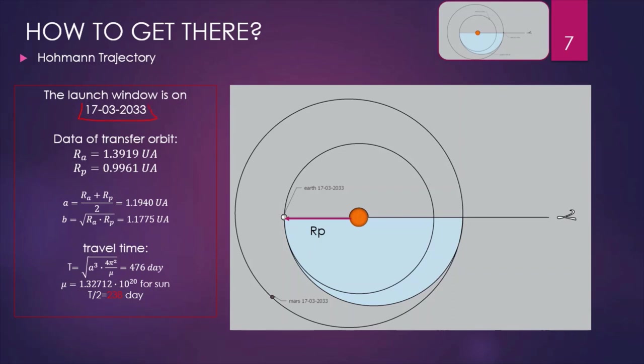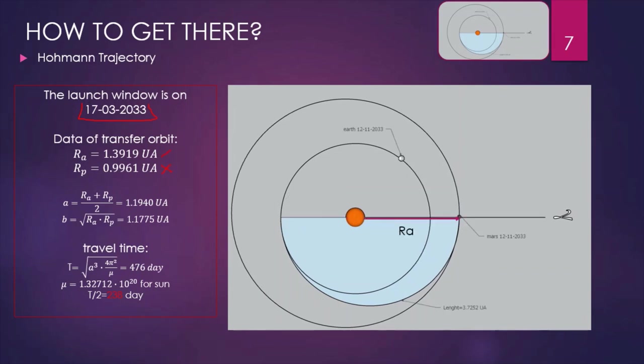Here are displayed also the data of the transfer orbit. The radius of the perihelion at the launching date is here, and the radius of the aphelion at the arrival date is here. By means of this relation, we can calculate the major and minor semi-axis of the elliptical orbit, and also the travel time by means of the third Kepler equation. The Mi is the Mi of the Sun because we are moving around the Sun. Half of this time is our transfer time: 238 days.